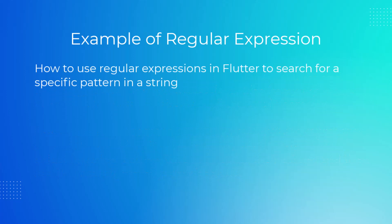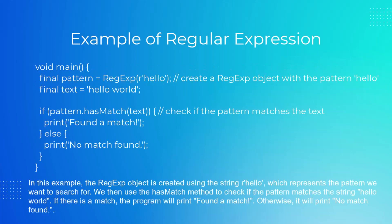Here's an example of how to use regular expressions in Flutter to search for a specific pattern in a string. The regex object is created using the string 'hello', which represents the pattern we want to search for. We then use the hasMatch method to check if the pattern matches the string 'hello world'. If there is a match, the program will print 'found a match', otherwise it will print 'no match found'.